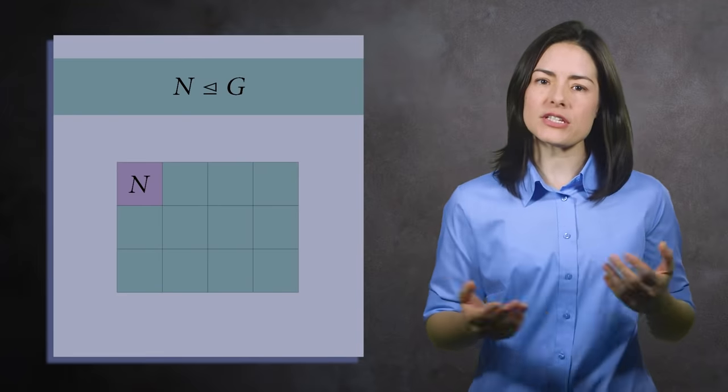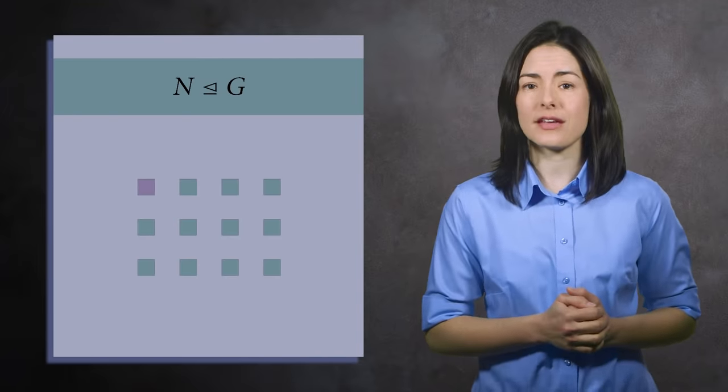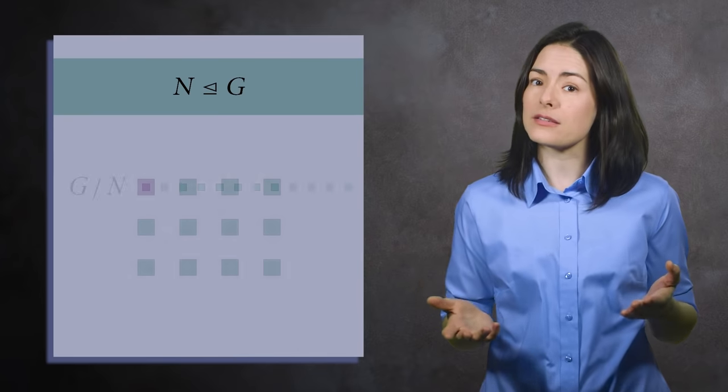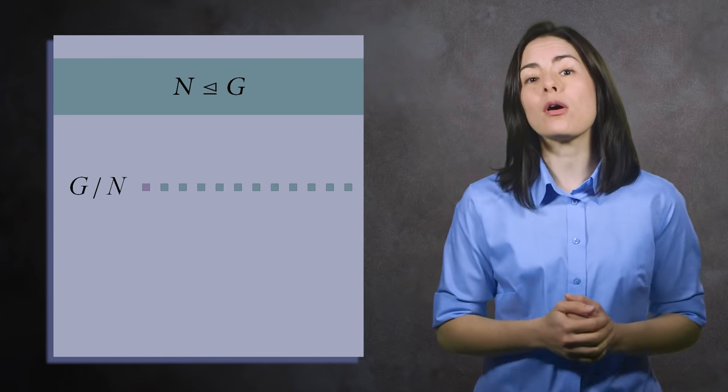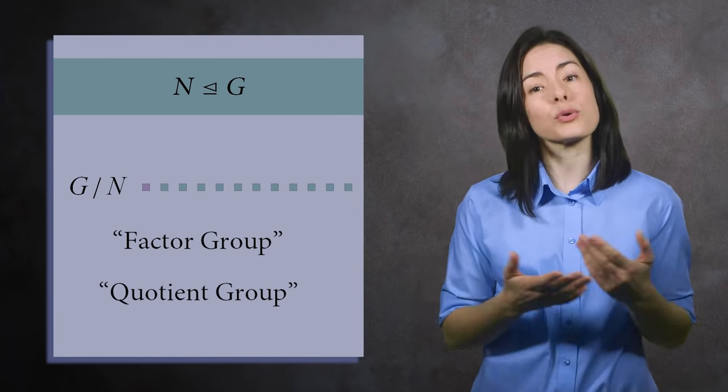So a normal subgroup N partitions a group G into cosets. And if we treat the cosets as elements, then they also form a group which we call a factor group, or a quotient group.